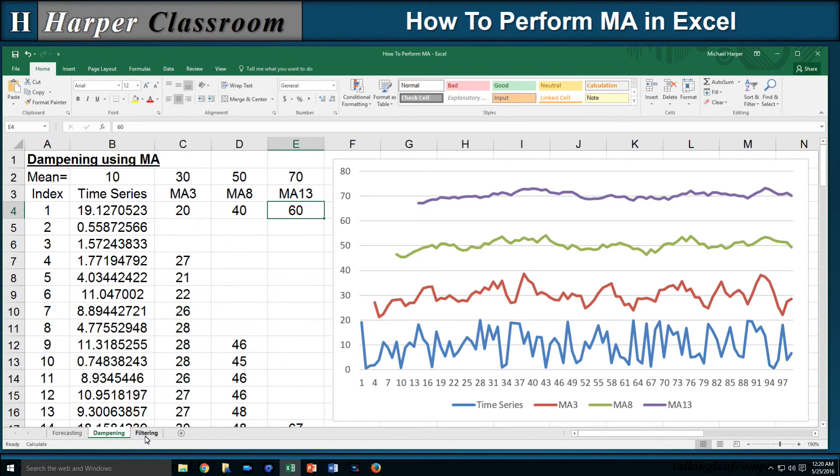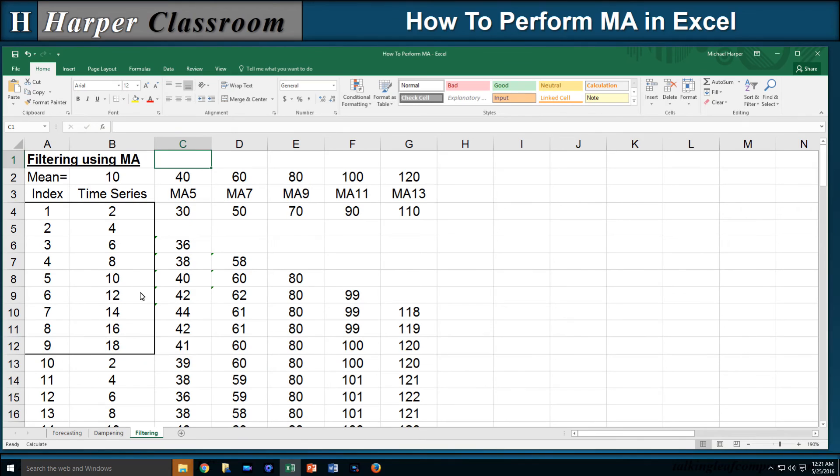Let's go to the filtering tab. In filtering using moving average, I don't have a random time series. I created a time series here of 2, 4, 6, 8, 10, up to 18, but then I repeated that again for the next 9, and the next 9, and the next 9. So my time series has a very distinct periodicity of 9. It repeats every 9.